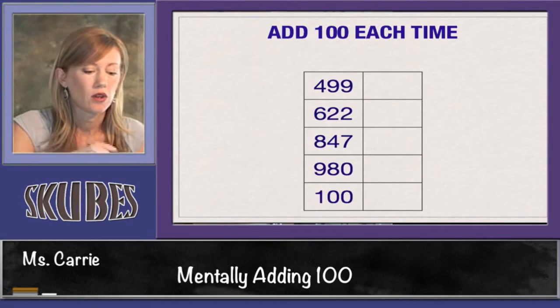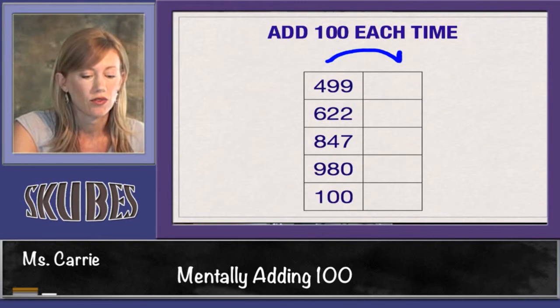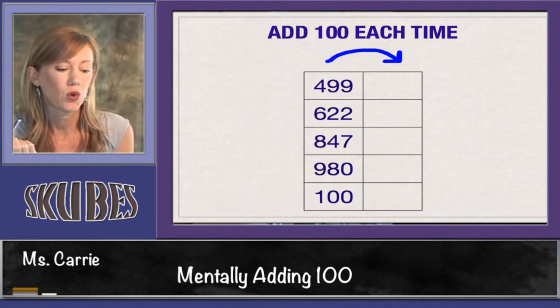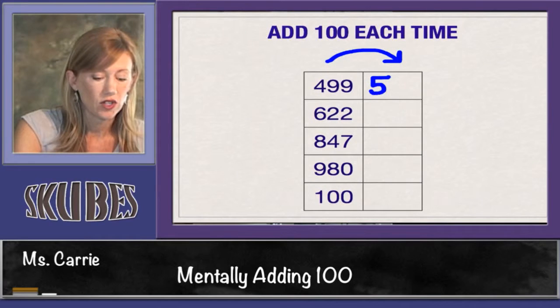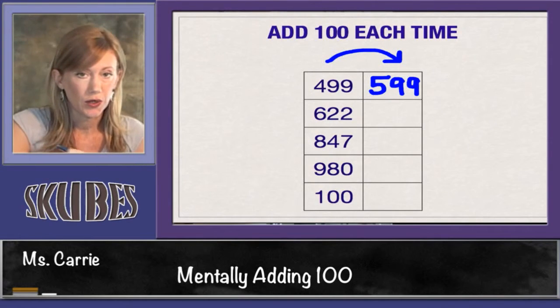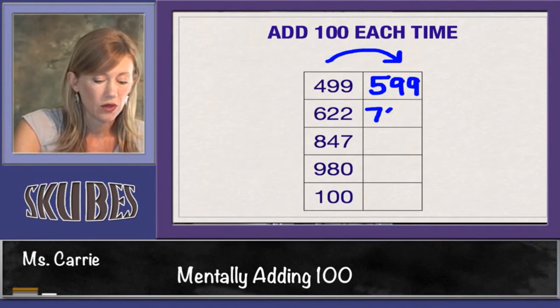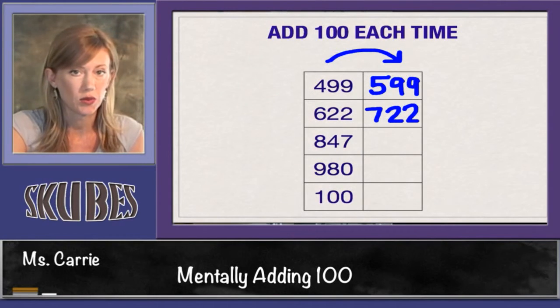Let's try one more grid. Remember, we're going to start here and we're going to add 100 over here. So 499 would be 599. We're going to add to that hundreds place. 622 would be 722. Tens and ones stay the same, but we change the hundreds place.